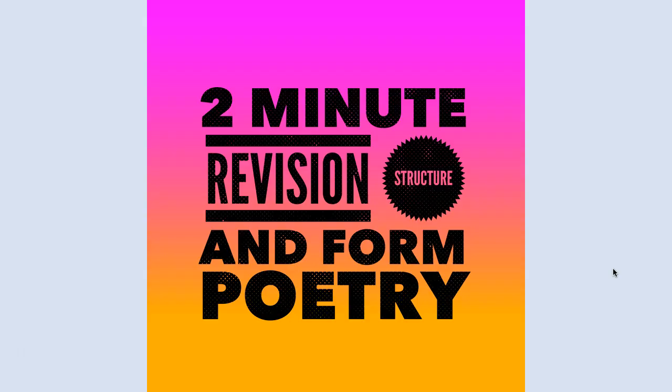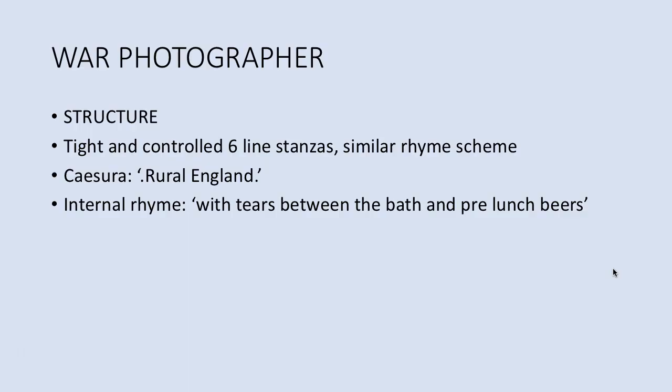Finally, the poem has a cyclical structure. We know that it starts with the photographer returning from a trip and it ends with him going back on a trip. The cyclical structure represents the idea of fate, that everything is inescapable and that this is destined to happen again and again until we truly do understand and recognise and come to terms with the real horror of war.